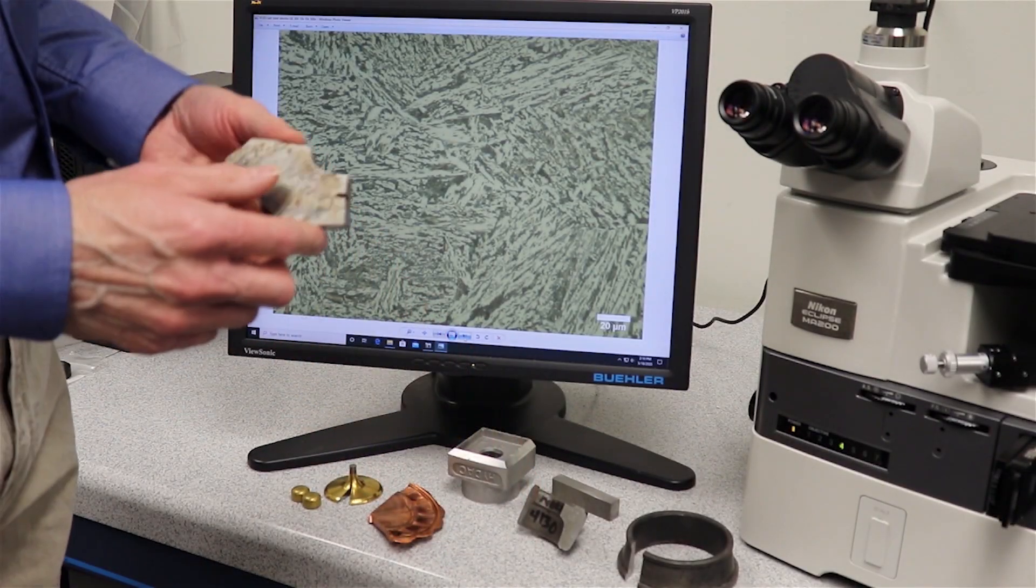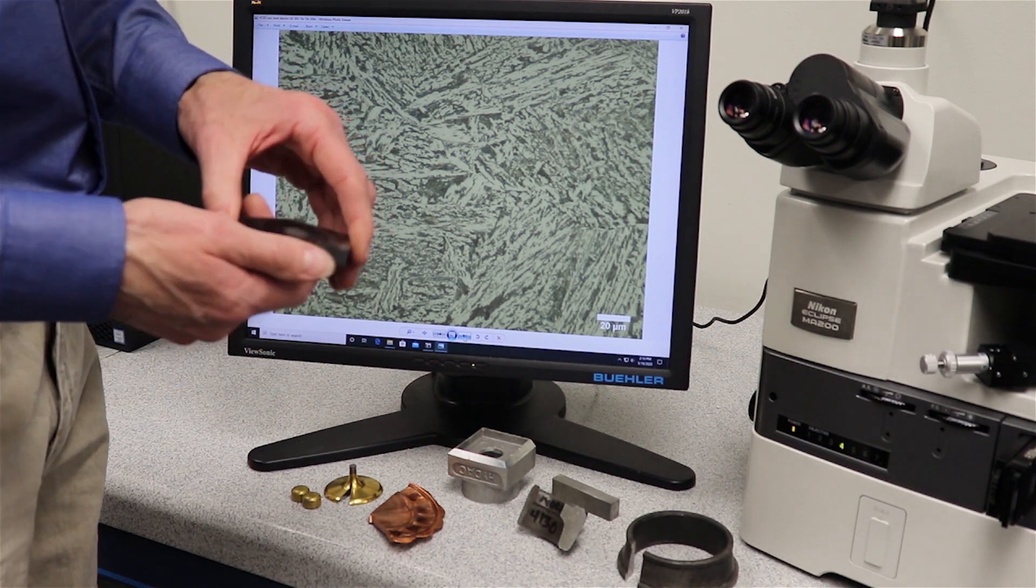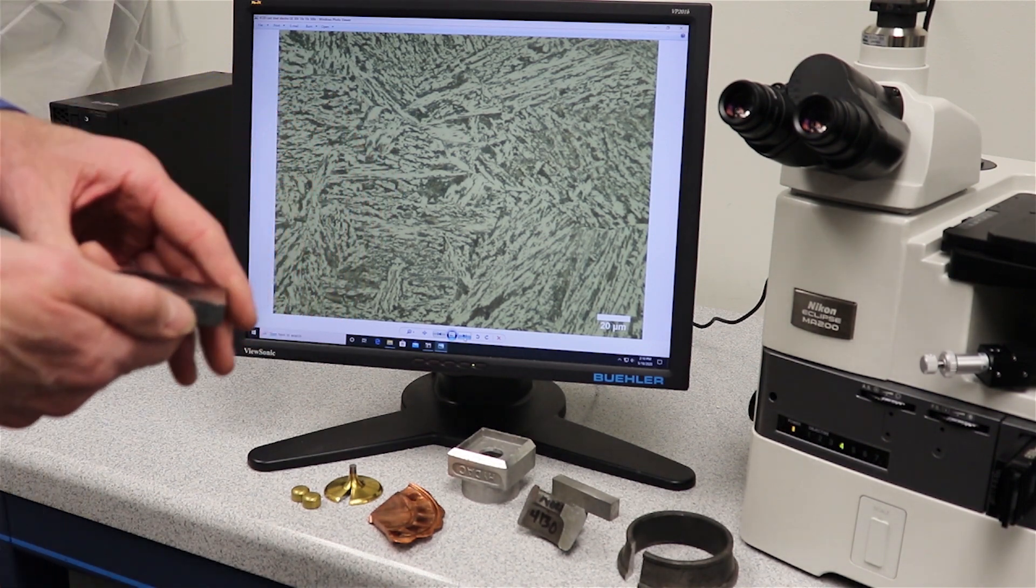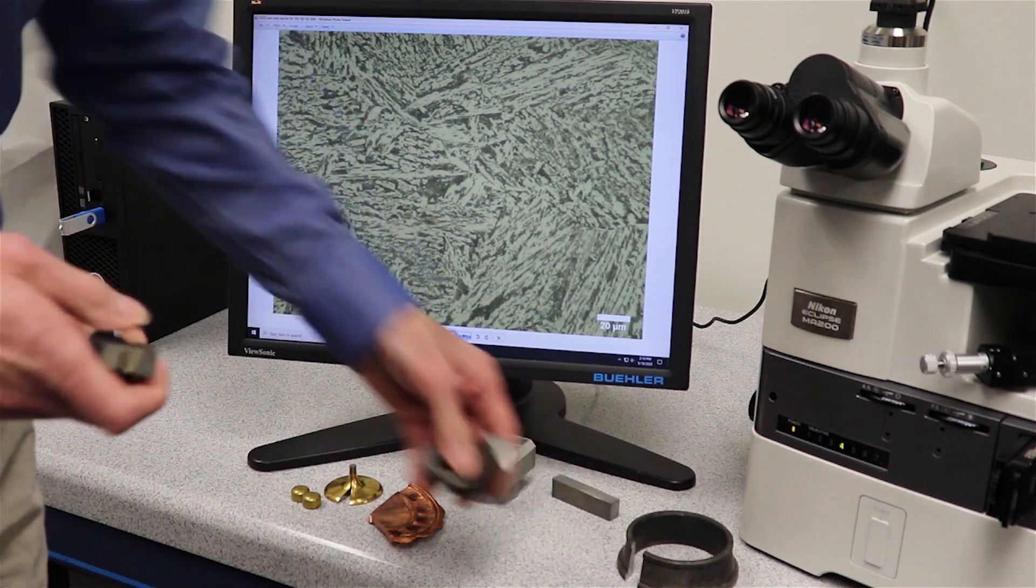Here we have our 4130 steel sample that we electropolished today, and the cast steel material. Electropolishing works very well on cast and wrought steels, carbon steel as well as stainless steel. A very easy process.